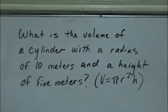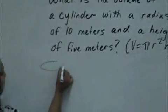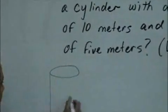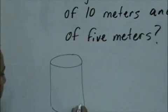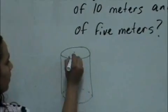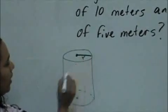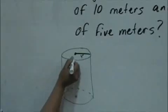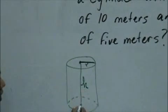So we're going to begin drawing a cylinder. This is our radius, which is r. This would be our height, which is h.